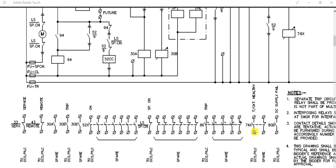74 is the trip circuit supervision relay. This relay checks the health of the trip circuit, and this indication is communicated to DCS or PLC. This is the DC supervision relay — 80 and ATB contact. This is a normally open contact used for the DC supply, and it is also going to DCS or PLC or the remote panel.